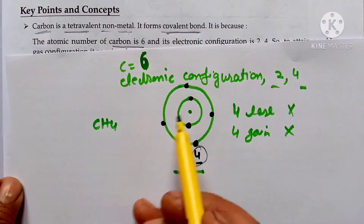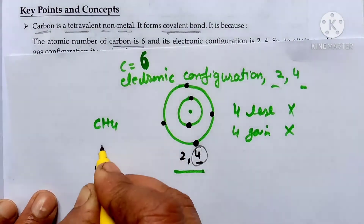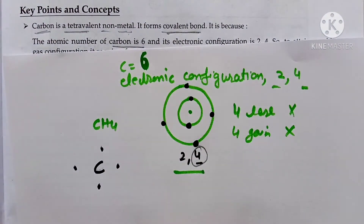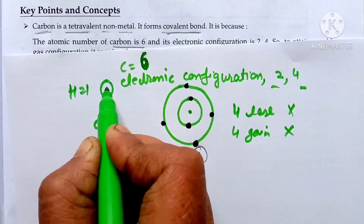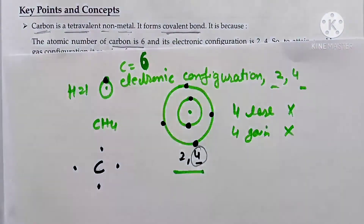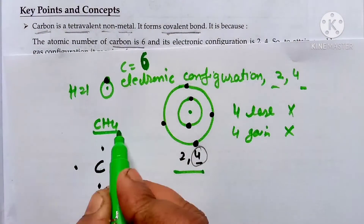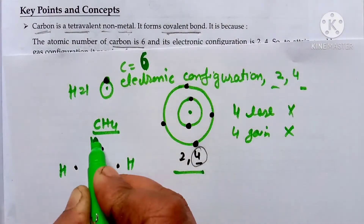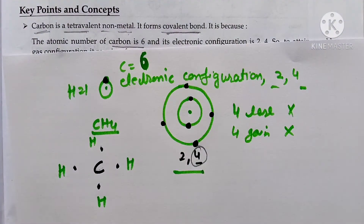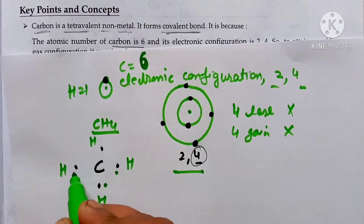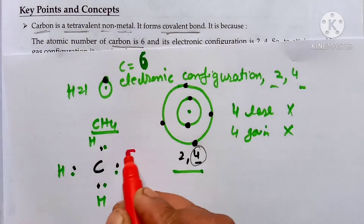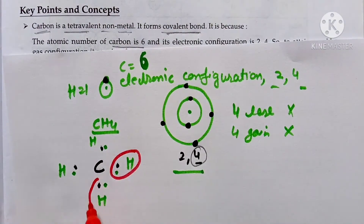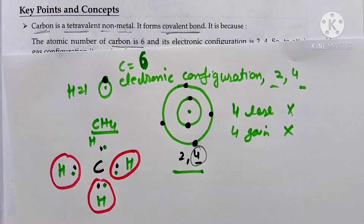In CH4, carbon has 4 electrons in its outermost shell. Hydrogen has atomic number 1 and its nucleus has only one electron. Each hydrogen electron bonds with one of carbon's 4 outer electrons. This sharing of electrons completes the hydrogen atom's shell and forms the CH4 molecule.